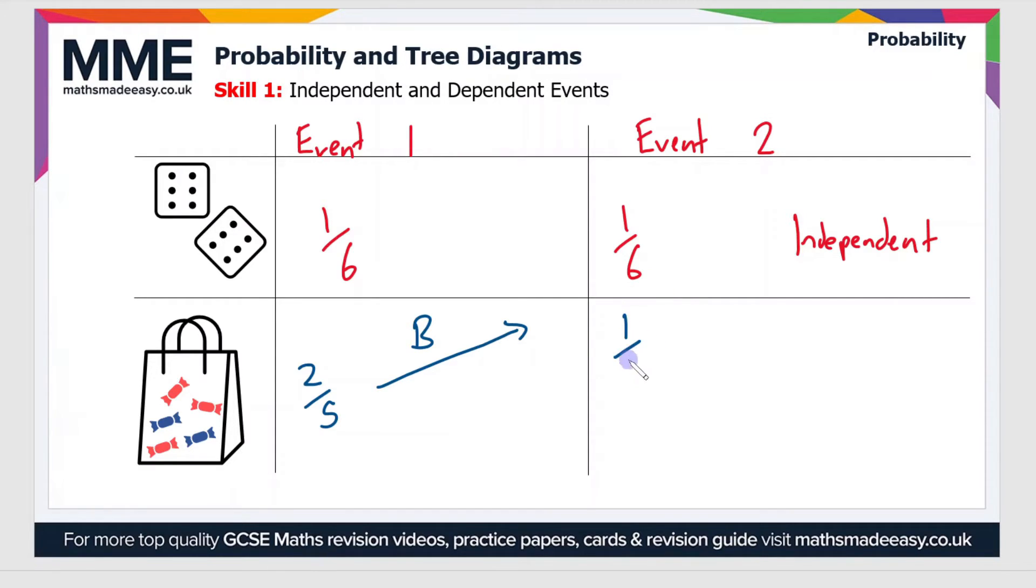But if the first sweet was red, then there'll still be four sweets left in the bag, but this time both blue sweets will still be there. So the probability is two out of four, or one-half. As you can see, the probability of withdrawing a blue sweet in event two depends on the outcome of event one. Therefore, these are dependent events.